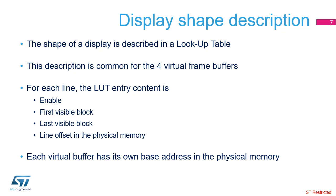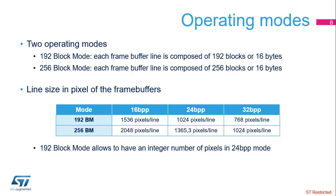Each virtual buffer has its own base address in the physical memory. The Chrome GRC runs with two operating modes: 192 blocks per line mode, or 256 blocks per line mode. The 192 blocks per line mode is useful, as we can have an integer number of pixels per line when the frame buffer color mode is in 24 bits per pixel.